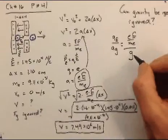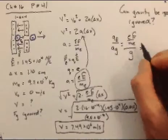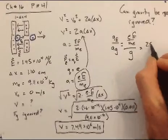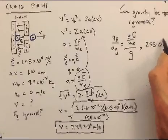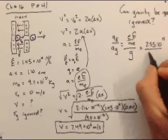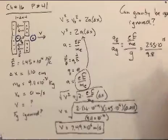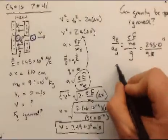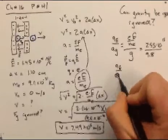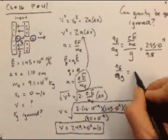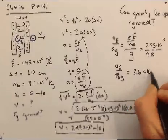Well, long story short, if you plug in the numbers here, you get a ratio here of about 2.55 times 10 to the 15th, divided by G, of course, which is 9.8. In other words, this ratio, A sub E divided by A sub G is about 2.6 times 10 to the 14th. Now, did I need the 2.6 here? No, it's 10 to the, the acceleration due to the electrostatic field is 10 to the 14th times larger than the acceleration due to gravity.